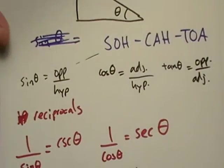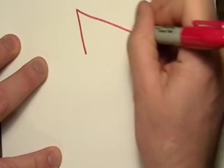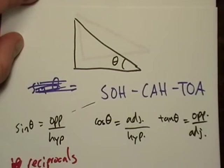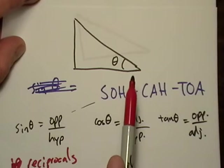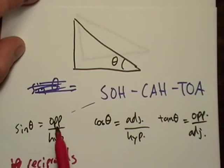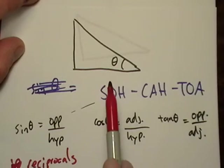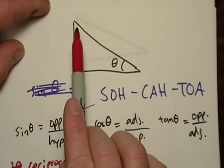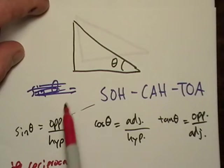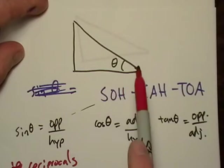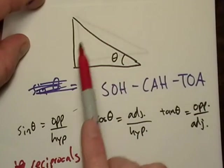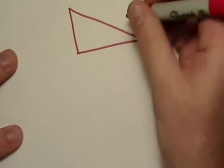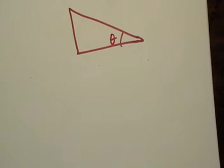Let's dive right into some applications. I'm going to draw a triangle. One more important thing to note: all these rules I just wrote — these sides and these trig functions — are all with respect to a certain angle. I called it angle theta. If you chose a different angle, the opposite and adjacent sides would change. So with respect to angle theta, this is how everything works out.